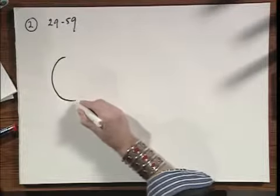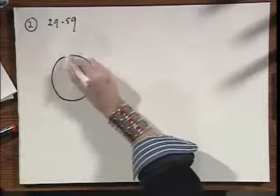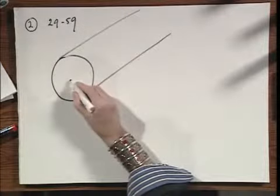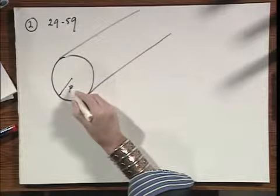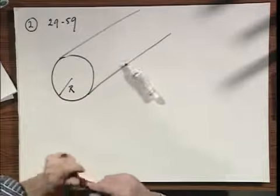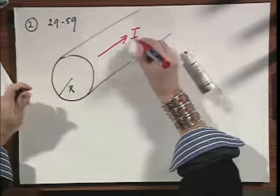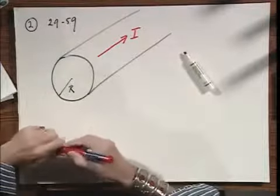Here we have a long wire with a circular cross-section. It has a radius R. There is a current going into the wire in this direction, but the current density is not uniform.